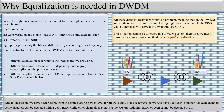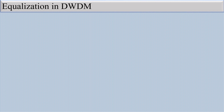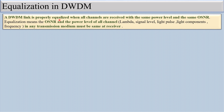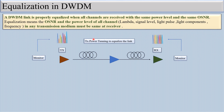This situation cannot be tolerated in the DWDM system, therefore we must introduce a compensation method called signal equalization. A DWDM link is properly equalized when all the channels are received with the same power level and the same OSNR. Equalization means the OSNR and the total power level of all channels — all lambda signals or light components — in any transmitting medium must be the same at the receiver.